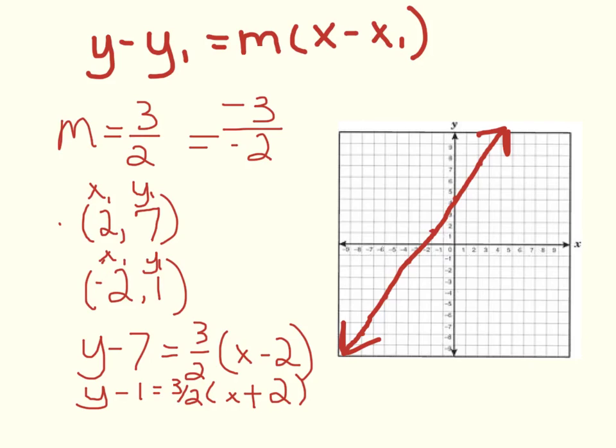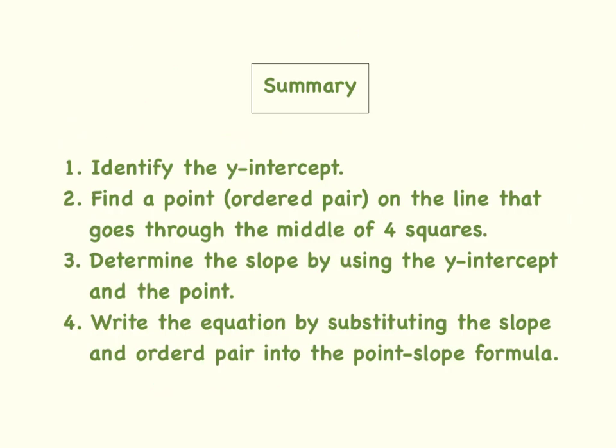So, anyway, let's summarize what we've done in this video. First, identify the Y-intercept. Second, find a point, which is an ordered pair, on the line that goes through the middle of four squares. Number three, determine the slope by using the Y-intercept and the point. Number four, write the equation by substituting the slope and ordered pair into the point slope formula.